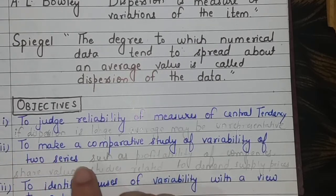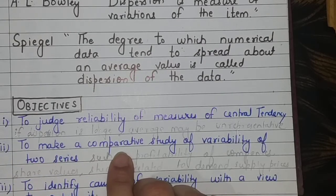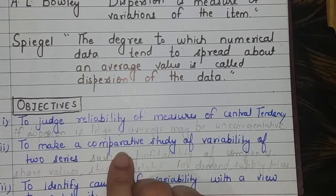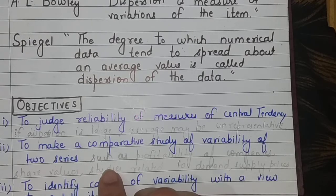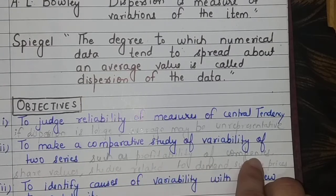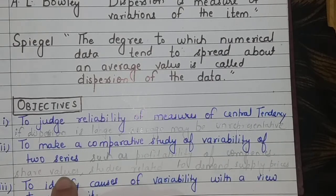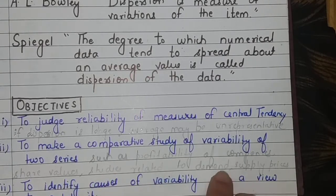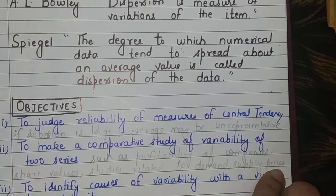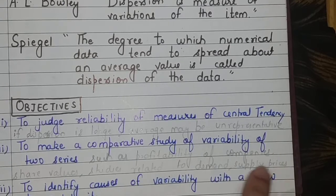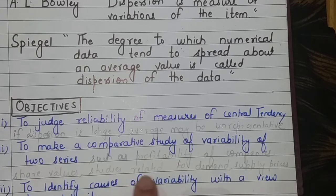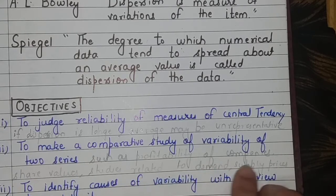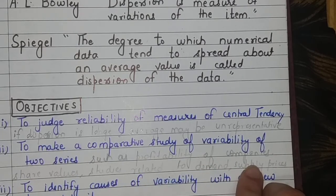Number two, we use measures of dispersion to make a comparative study of the variability of two series. You can compare any two types of series, for example the profitability of companies, or the share values of companies, studies related to the demand, supply, prices etc. So when we want to compare these, we can do it with the help of measures of dispersion.